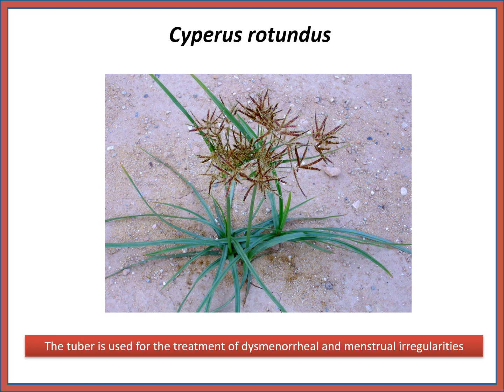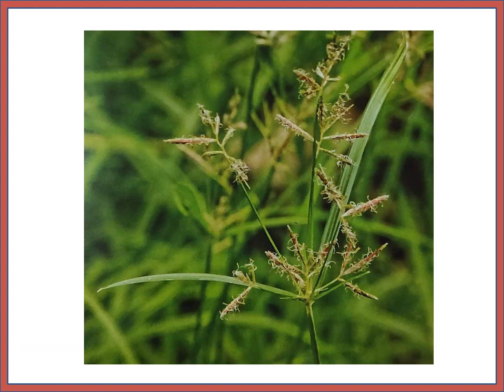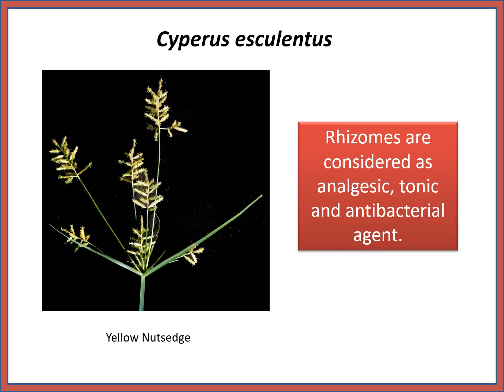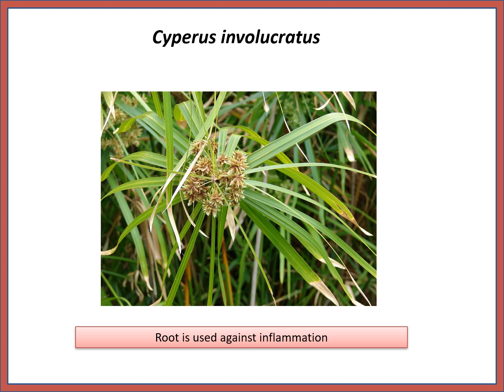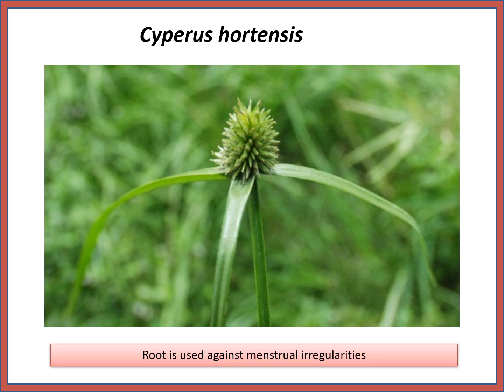Some important Cyperus species: Cyperus rotundus is very common and the tuber is used for the treatment of dysmenorrhea and menstrual irregularities. Cyperus esculentus, or yellow nut sedge — rhizomes are considered analgesic, tonic, and antibacterial agents. Cyperus difformis: root is used against inflammation.